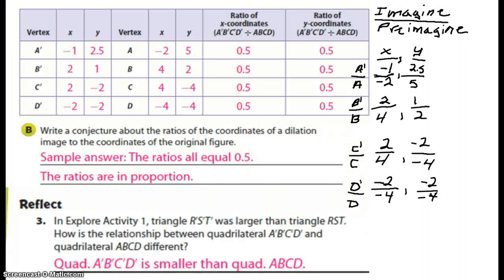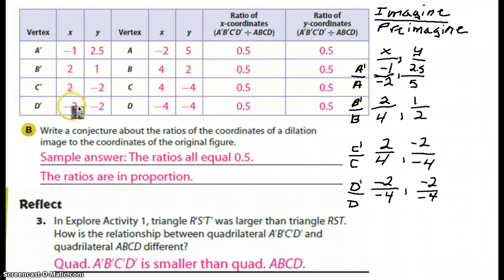Okay, so here's what you should have. For A prime, you should have negative one and 2.5. For B prime, you should have two and one. For C prime, you should have two, negative two. And for D prime, you should have negative two, negative two.